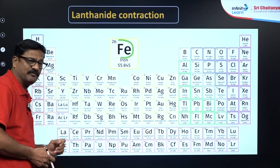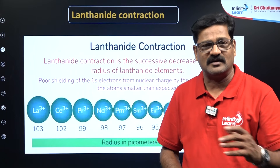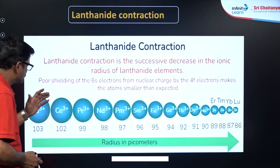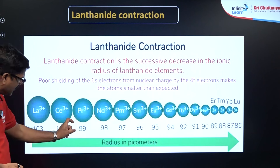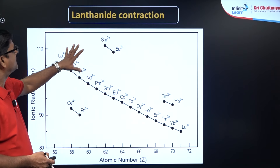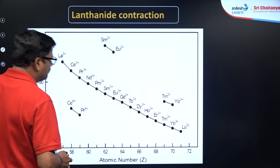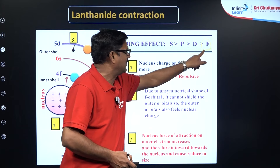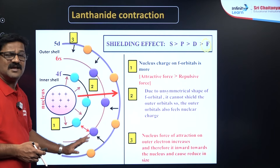In the lanthanoids, from cerium to lutetium, the atomic size gradually decreases. The steady decrease in the atomic radius or ionic radius among the lanthanide elements is called lanthanide contraction. You can see the values decreasing — 103, 102, 99 — it is a steady decrease, and that is graphically shown here. Why does lanthanide contraction happen? Because the differentiating electron enters the 4f-orbital, and the 4f-orbital has poor screening effect. Due to this poor screening effect, the atomic size steadily decreases — that is lanthanide contraction.